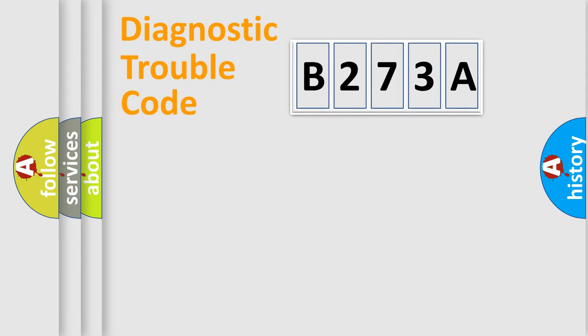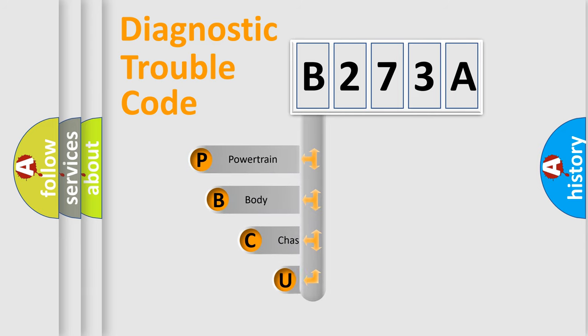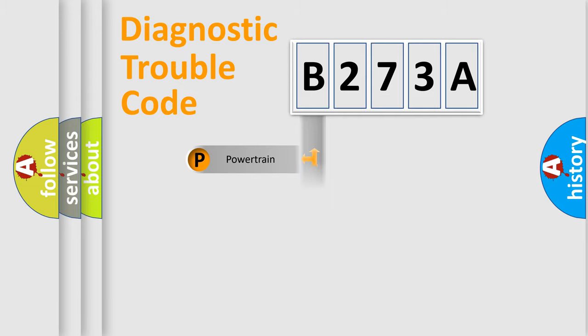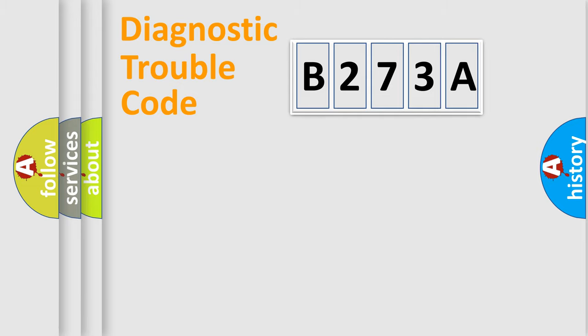Let's do this. First, let's look at the history of diagnostic fault code composition according to the OBD2 protocol, which is unified for all automakers since 2000. We divide the electric system of the automobile into four basic units: Powertrain, Body, Chassis, and Network.